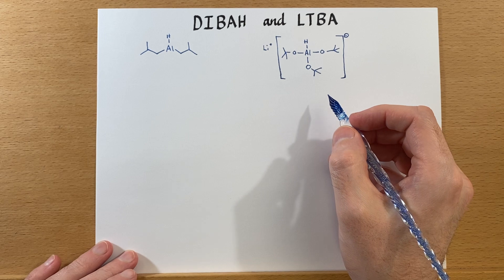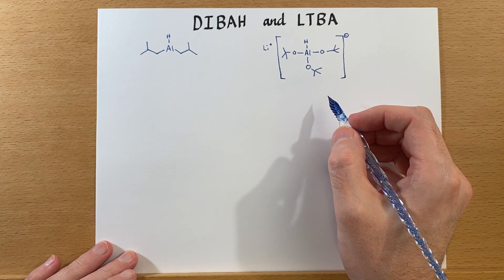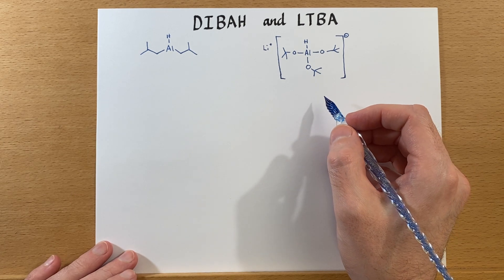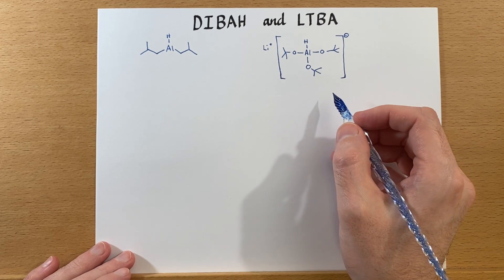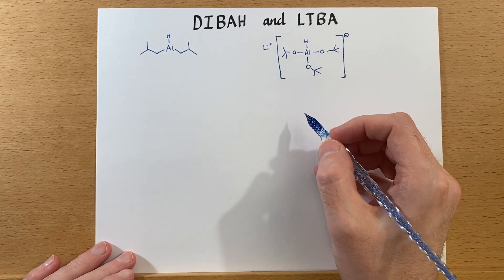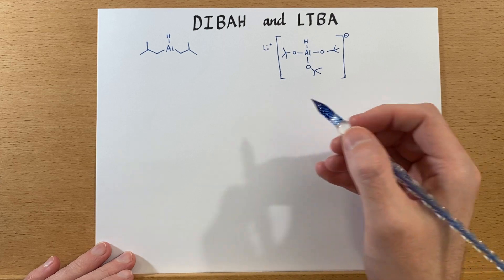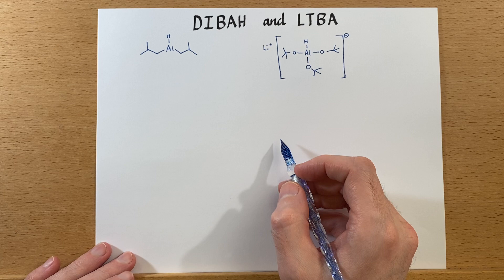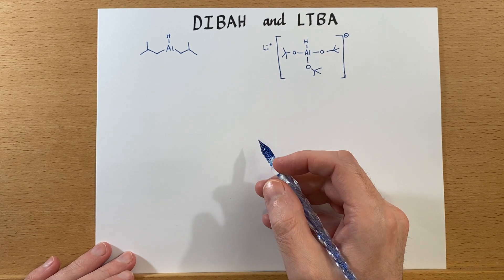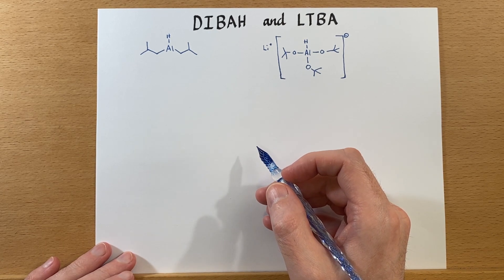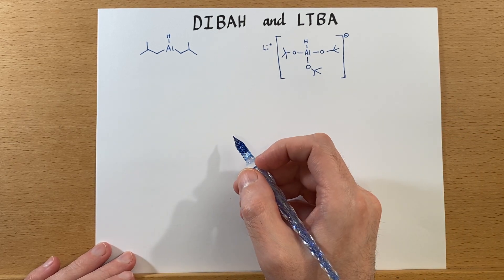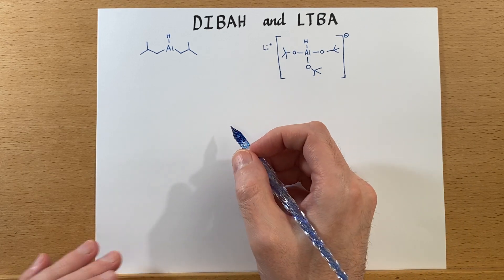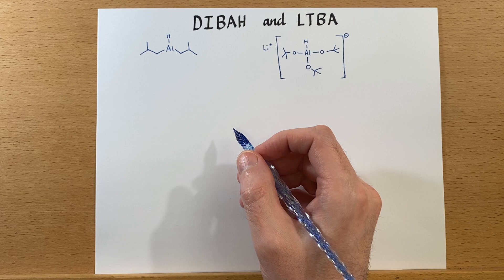LTBA can be used to convert acid chlorides to aldehydes if you proceed at a low temperature. If you do not use low temperatures, you will proceed to reduce all the way to the alcohol. So if you're going to the trouble of using these specialized reagents, make sure you set up your reaction conditions to stop at the aldehyde and not go all the way to the alcohol — otherwise you may have well used sodium borohydride or lithium aluminum hydride.